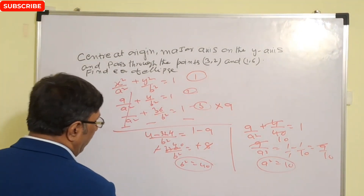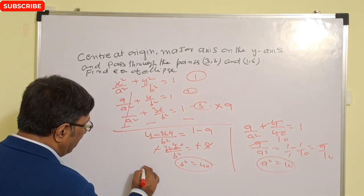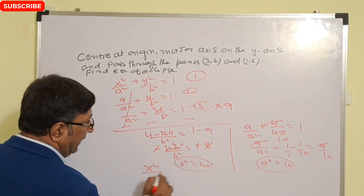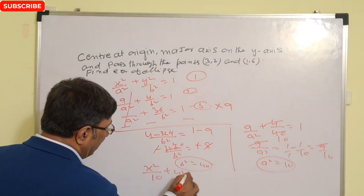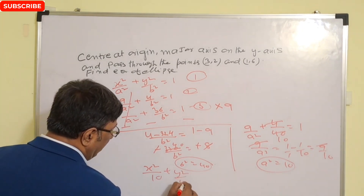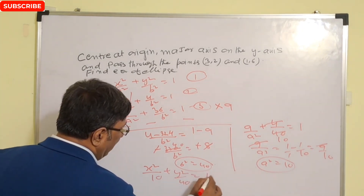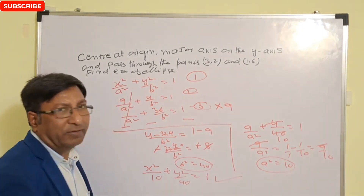So the equation of the ellipse is x²/10 + y²/40 = 1. Thank you.